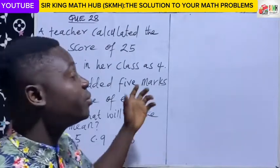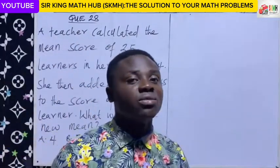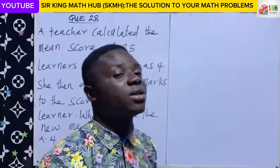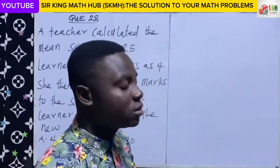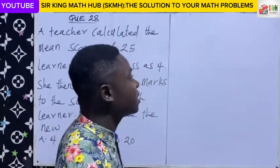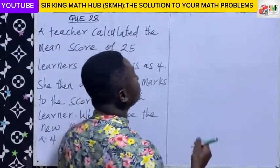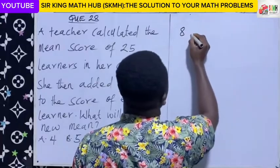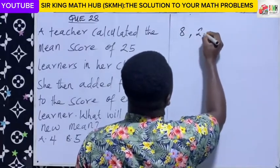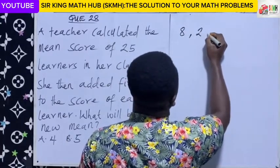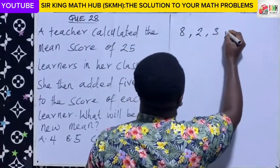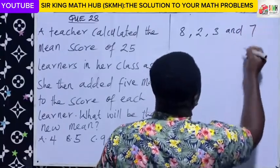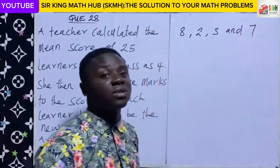So even before we start solving the question, let's quickly revise ourselves with the concept of mean. So now let's say you have these numbers: eight, two, three, and seven.